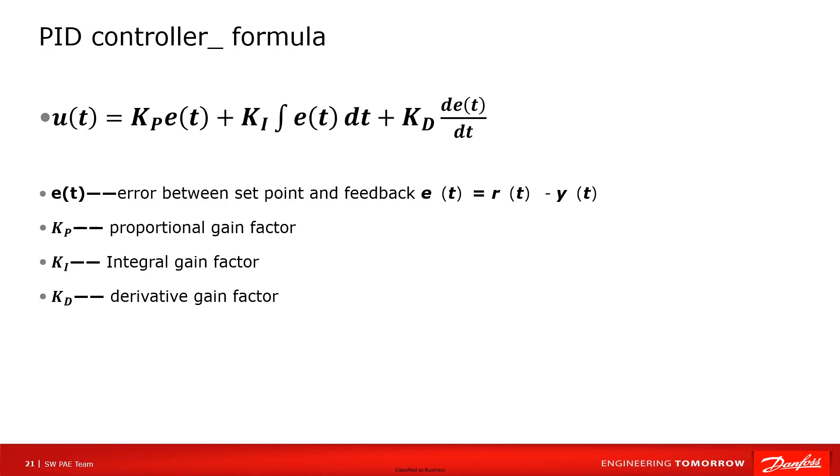Kd is the derivative gain factor. Output of derivative controller is directly proportional to the rate of error changing.